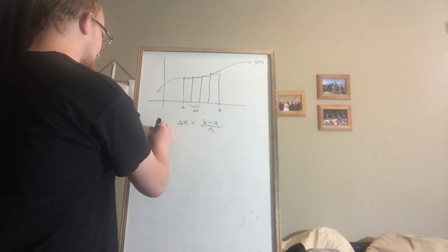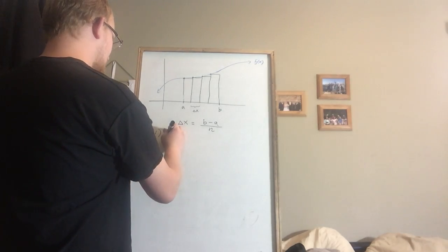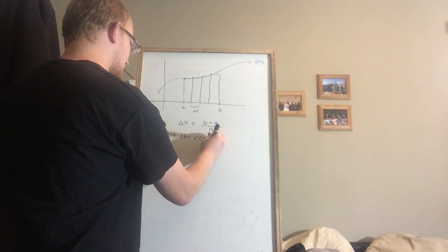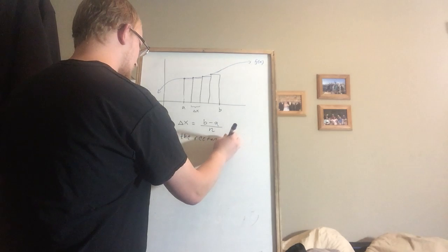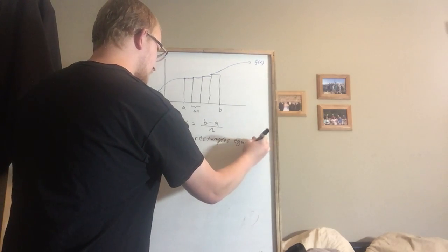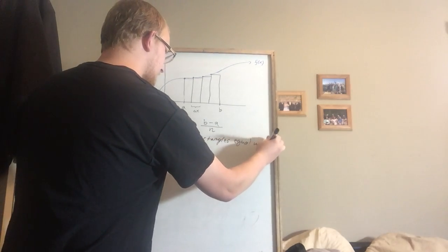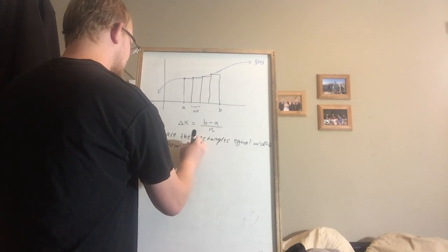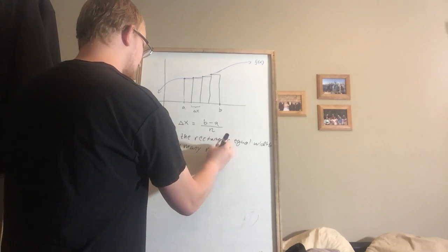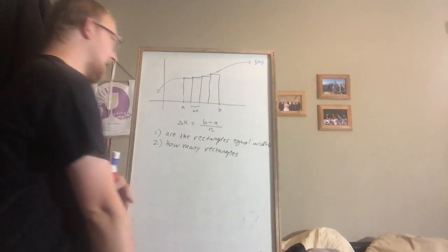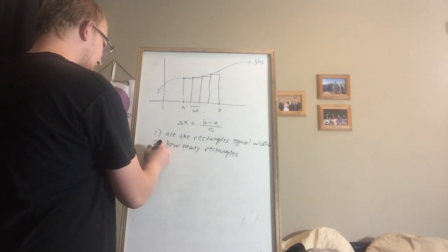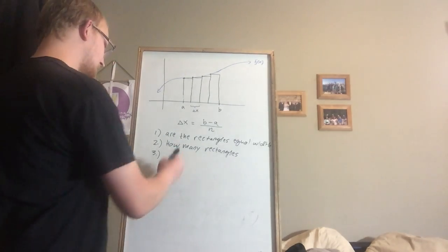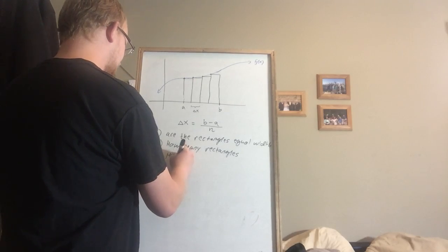So let me write this down. The first question is: are the rectangles equal width? The next question is: how many rectangles to estimate? And then your third question might be: how do I figure out the height of each rectangle?